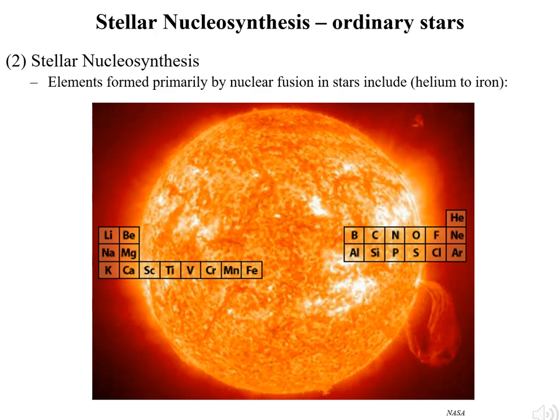Ordinary stellar nucleosynthesis is even happening in the sun right now. Through nuclear fusion, lighter elements are combined to form heavier and heavier elements. The first step in this chain typically is the fusion of hydrogen atoms left over from the Big Bang. Fusion of hydrogen atoms produces helium and releases a lot of energy in the process.